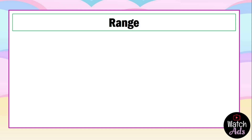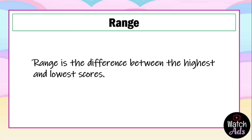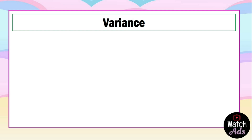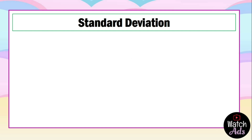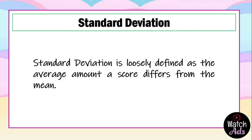There are three different ways to calculate variability. First is the range, which is the difference between the highest and lowest scores. Second is the variance, which is how spread out or far away a score is from the mean. And the third is the standard deviation, loosely defined as the average amount a score differs from the mean.